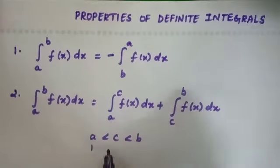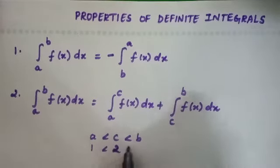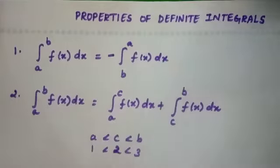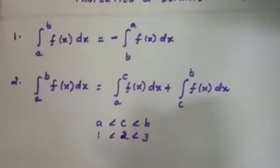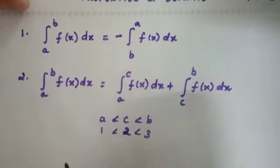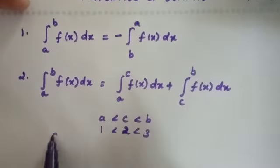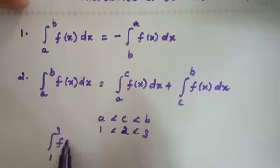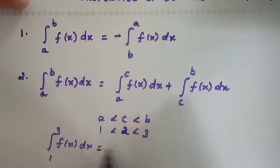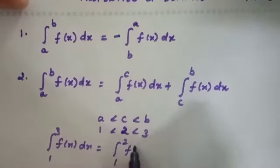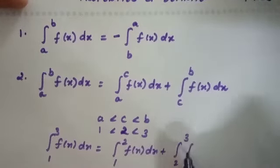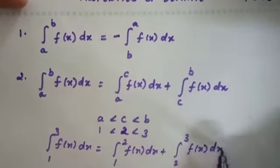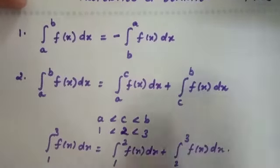For example, if a is 1 and b is 3, and c is 2, you will get the integral from 1 to 3 of f(x) dx equal to the integral from 1 to 2 of f(x) dx plus the integral from 2 to 3 of f(x) dx. This is the second property.